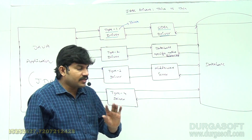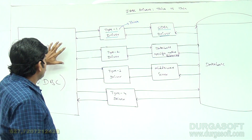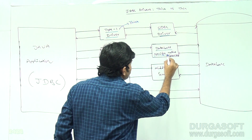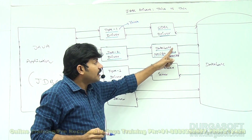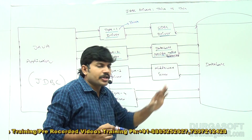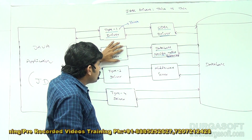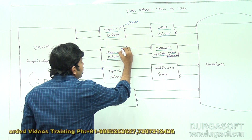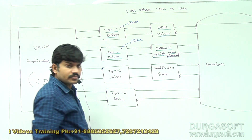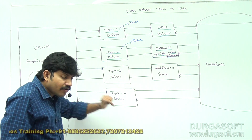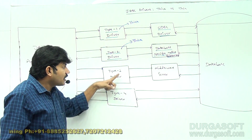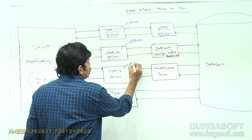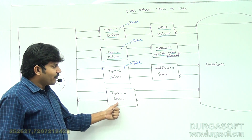Same way, Type 2 driver: the Java application communicates with the Type 2 driver, which internally uses database-specific native libraries, which then communicate with the database. So Type 2 driver requires native libraries — that's why it is also a thick driver. Next, Type 3 driver requires a middleware server to communicate with the database — so Type 3 driver is also a thick driver.